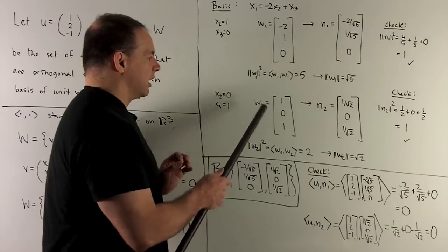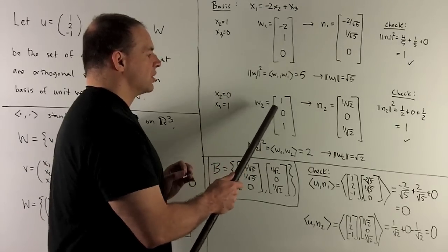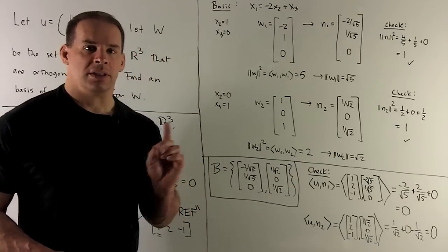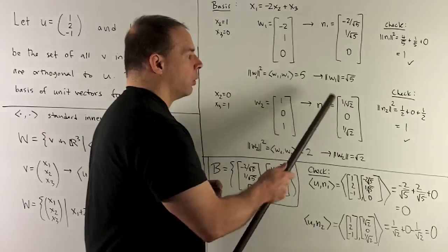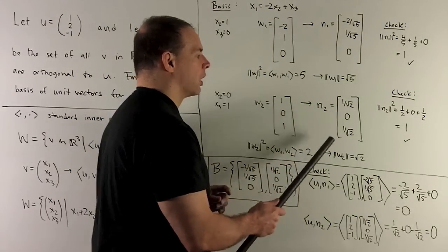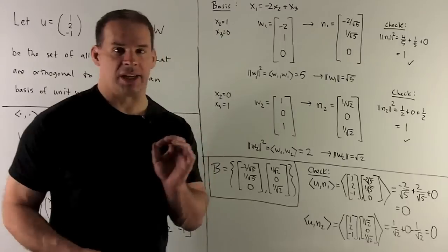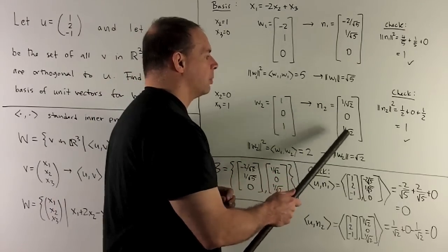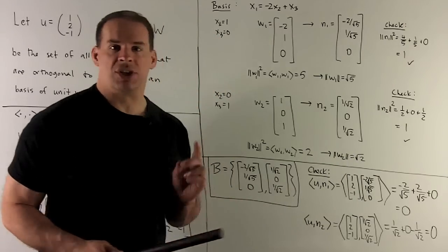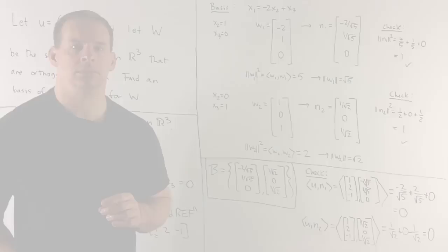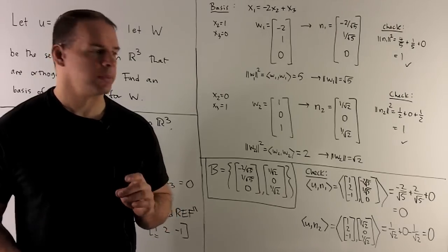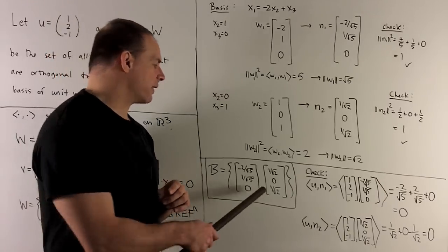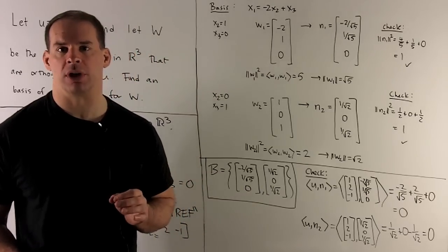Finding the length of W2: the inner product of W2 with itself gives 1 + 0 + 1 = 2, so the length is √2. Dividing by the length, N2 = (1/√2, 0, 1/√2). Checking its length: the sum of squares of entries gives 1/2 + 0 + 1/2 = 1, confirming it's a unit vector. Our basis for W consists of N1 = (-2/√5, 1/√5, 0) and N2 = (1/√2, 0, 1/√2).